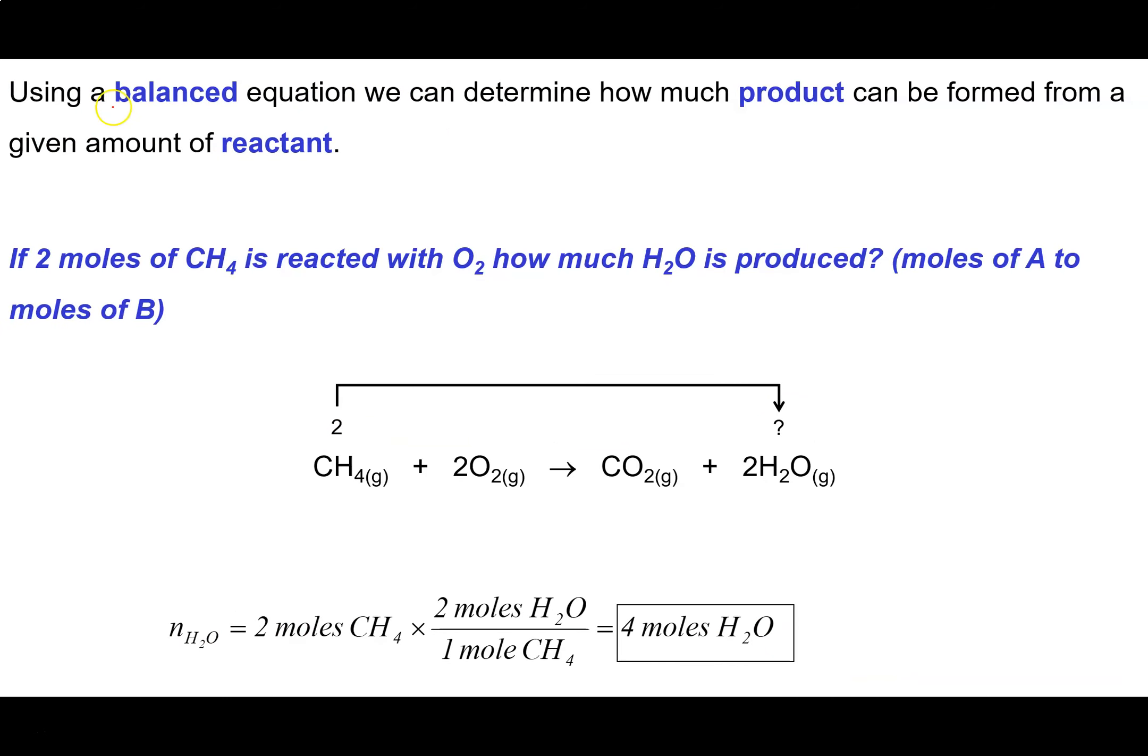So if you have a balanced chemical equation, you can always determine how much product you are able to make from a given amount of reactant using our mole ratio. So I'm going to be talking about the combustion of methane here. So here's my balanced equation. And it says if two moles of methane is reacted with oxygen, how much water is produced? So two of these guys, how many of those guys am I going to produce? And it's real easy because I can establish the mole ratio.